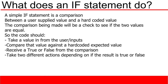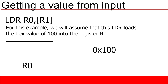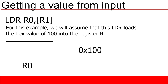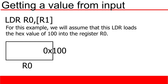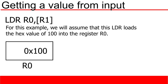The first step is to get some input. I'm going to assume that you've already watched the video on the load register function. This is a simple function that allows you to load some value into a register. For now I'm going to assume that our input is a hex 100 value, and it is going to be stored in the R0 register.